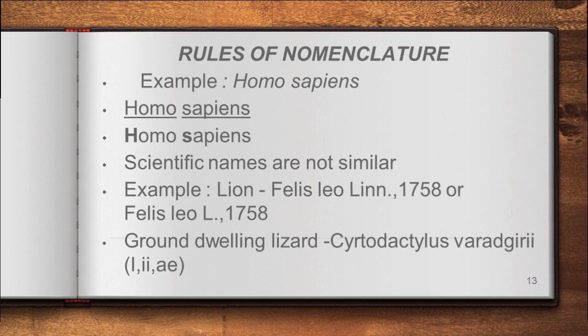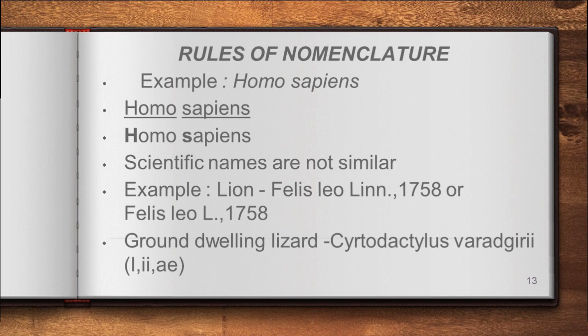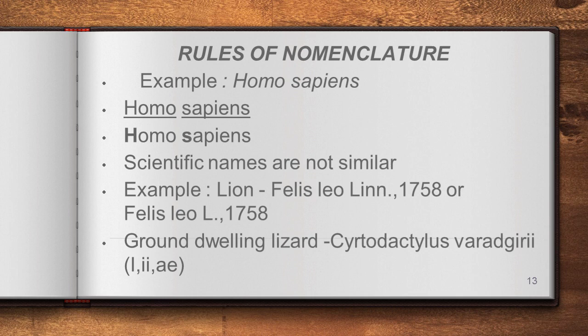So we have three methods of naming: vernacular nomenclature, binomial nomenclature, and trinomial nomenclature — with tautonymy also included under naming methods. Now let us move to the rules of nomenclature. When we assign a scientific name for a particular species, certain rules must be followed, as given by the ICZN.